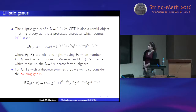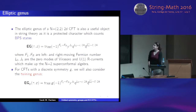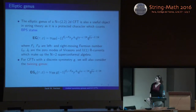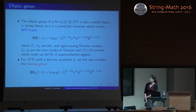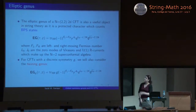The elliptic genus is a useful quantity to compute because it is a topological invariant, so it's independent of the point in moduli space at which you compute it. From the point of view of physics, it counts what are called BPS states — in the two-dimensional conformal field theory, these are states where the right movers are in the ground state. Therefore the elliptic genus is a holomorphic function in tau, and there's a spectrum of left moving states graded by U(1) charge and energy level.